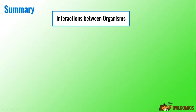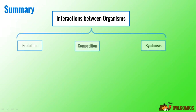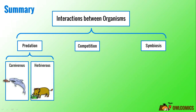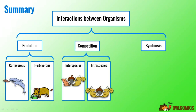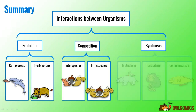Before we end the video, let's summarize what we learned today. There are three types of interactions between organisms: predation, competition, and symbiosis.